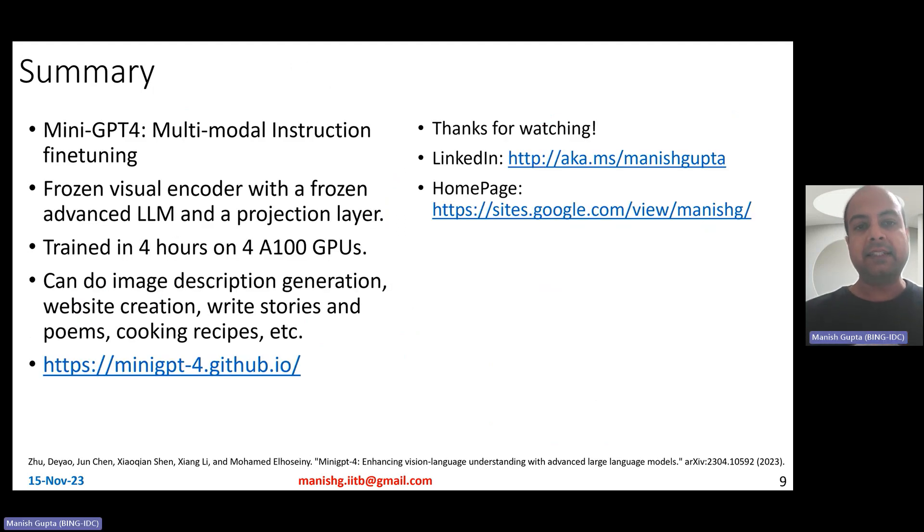Mini GPT-4, in summary, is a multimodal instruction fine-tuned model. It comprises the architecture, it's very simple: frozen visual encoder with a frozen advanced large language model, Vicuna in this specific case, and a projection layer. It is trained in 10 hours on four A100 GPUs. So 10 hours for pre-training, about seven minutes for fine-tuning. That's it. It can do very awesome tasks like image description generation, website creation, writing stories, explaining funny memes, writing poems, cooking recipes, and so on. If you want to play around with mini GPT-4, that's the link. Thank you for watching. Hope you liked the video. Connect with me on my LinkedIn or look at my search on my homepage. Thank you.